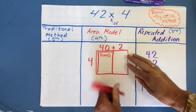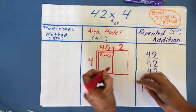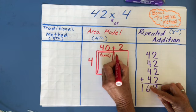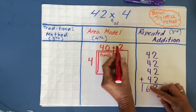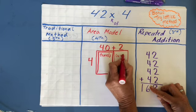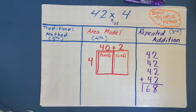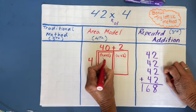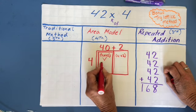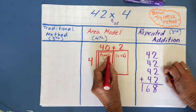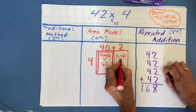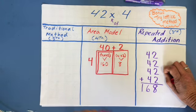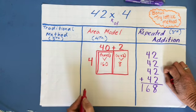In this box, this length here is equal to 4 and this length here is equal to 2. It's called partial products. Now I figure out what these are. I know 4 times 4 is 16, and then I just add a 0. And I know this is 4 times 2, which is 8.